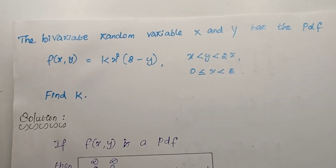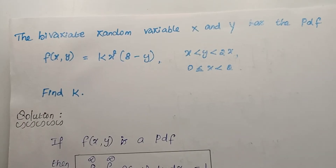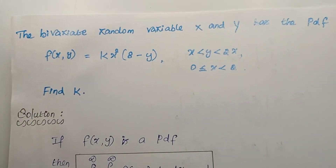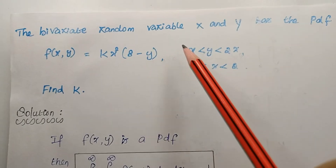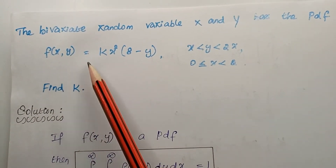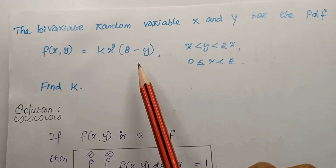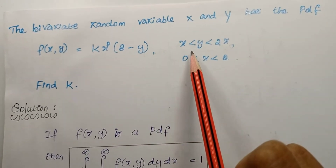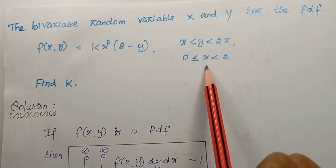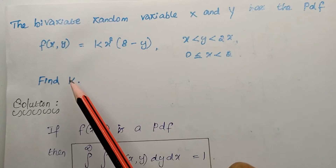In this video, we will talk about two-dimensional random variables topic, continuous type problems. The bivariate random variables x and y has the pdf f(x, y) which is equal to kx squared times (8 minus y). The limits are x less than y less than 2x, and 0 less than or equal to x less than 2. Find the k value. This is our question.